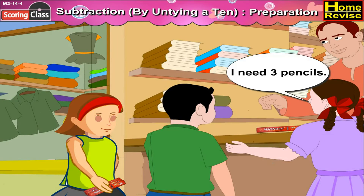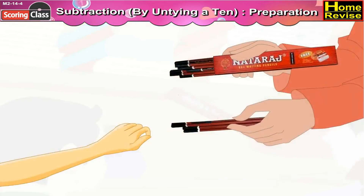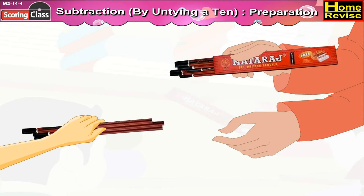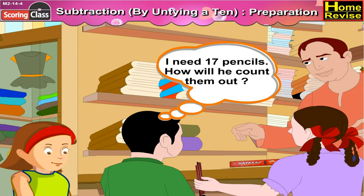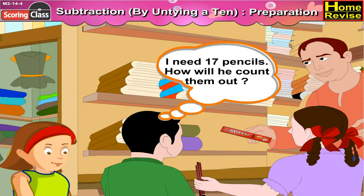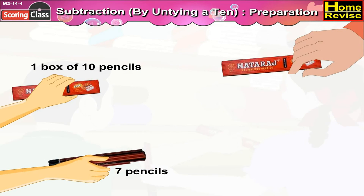Vidya said, I need three pencils. So the shopkeeper opened the box of ten pencils, counted three pencils, and gave them to Vidya. Then it was Raghu's turn. He said, I need seventeen pencils. The shopkeeper gave him one box of ten pencils, and then gave him the box of remaining seven pencils which he had opened earlier to give three pencils to Vidya.